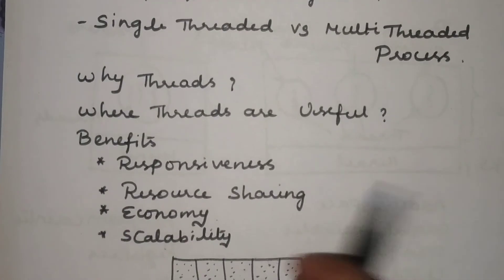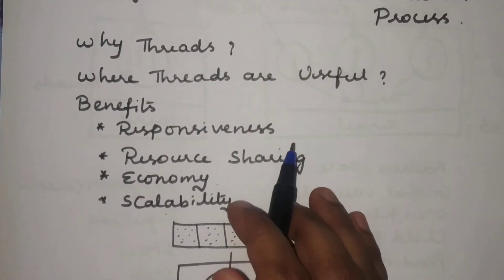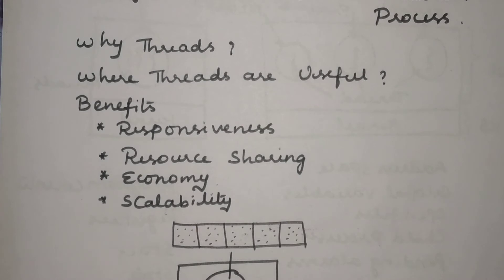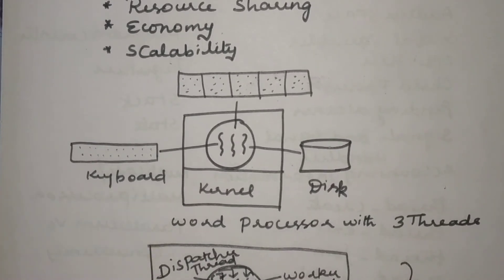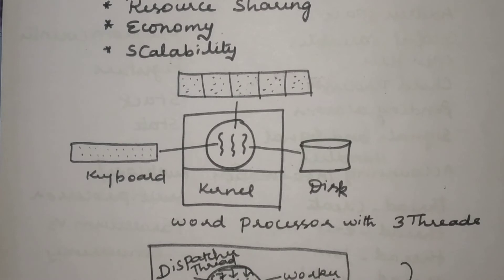Now let us see where threads are effectively used. I will explain with two examples. The first example is a word processor. In a word processor there are many operations you can perform — you can edit the document, copy it, paste into another document, and modify content on any page. Suppose you are working with a process that does not have any threads — what happens there?